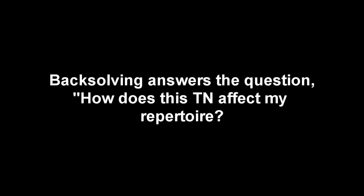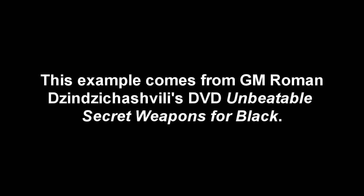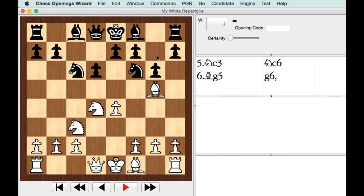What back-solving does for me, it answers the question of how does a theoretical novelty or some new game, which could have a TN in it, affect my repertoire? Maybe they published something in a magazine. In this case, I'm going to use an example from Roman Dzindzichashvili's DVD on the Sicilian. Now Roman in his DVD suggests playing the move that he's never seen played before, which is g6. Now he talks about the fact that this really looks bad, and it's anti-positional, and obviously the, I say obviously, but the move that just gets invited right away is Bxf6 to just try to punish this.